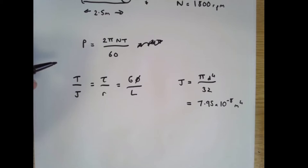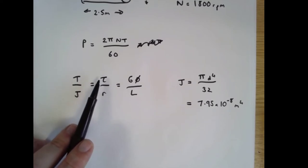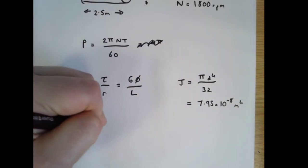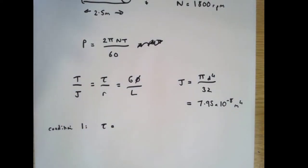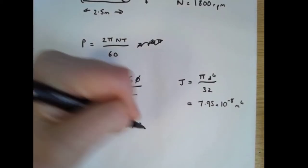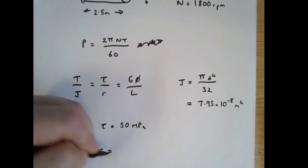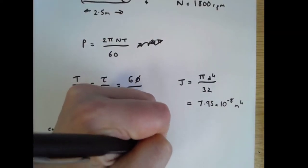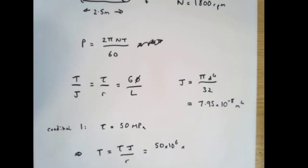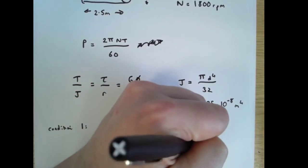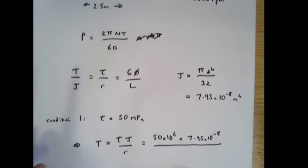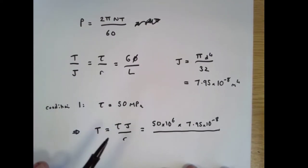First of all we are told that the maximum allowable shearing stress is 50 megapascals. So I'm going to say condition one is that tau can't be greater than, I'm going to set tau equal to 50 megapascals. Therefore t equals tau j over r equals 50 times 10 to the 6 multiplied by 7.95 times 10 to the minus 8 divided by r.